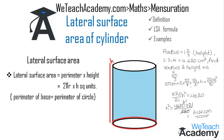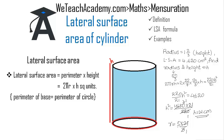Now substituting the value of h into the expression for radius: r = 5 × 21 / 3. Simplifying, 21 ÷ 3 = 7, and 5 × 7 = 35. So the radius is 35 centimeters.